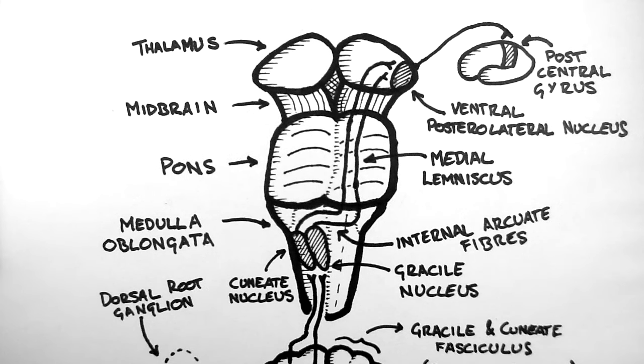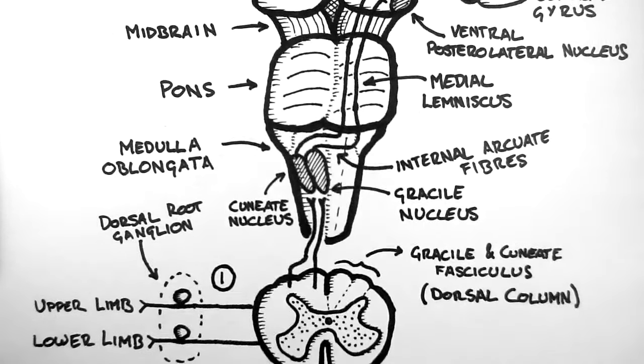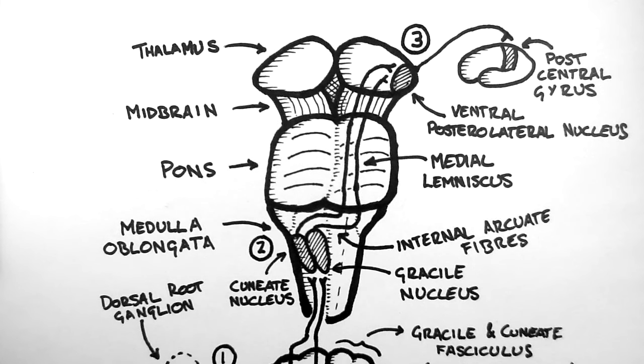So in total there are three neurons in this pathway. The first is in the dorsal root ganglion. The second is in the cuneate or gracile nucleus. The third is in the ventral posterolateral nucleus of the thalamus.